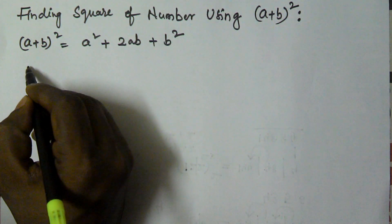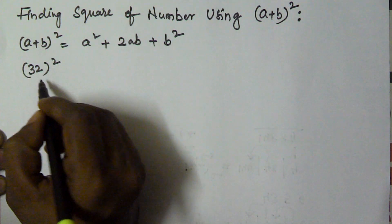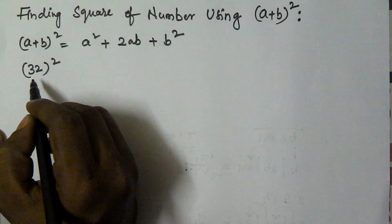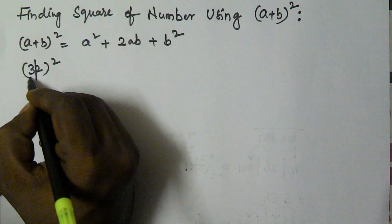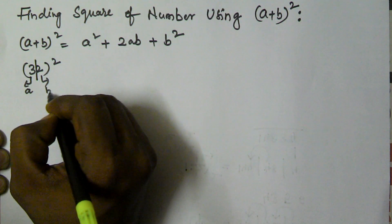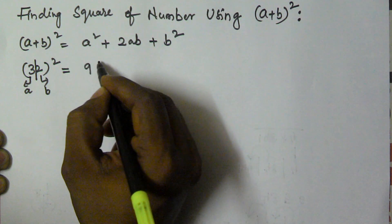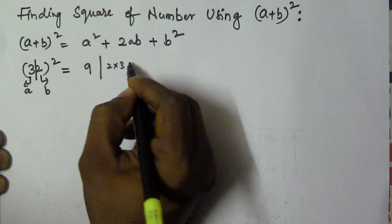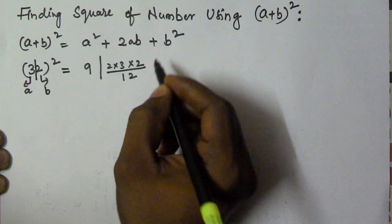Using this formula I want to find the square of 32, that is 32². Before finding the square of this number, I will divide the given number into two parts — that is 3 and 2 — so I will take the first part as a and the second part as b. So a² is 9, and 2ab is 2 × 3 × 2 = 12.